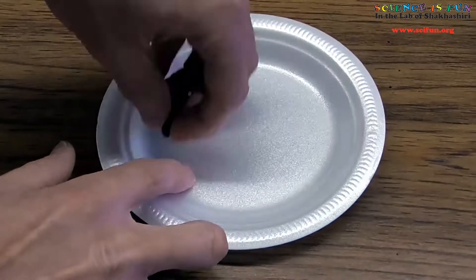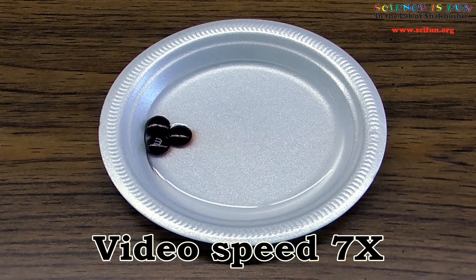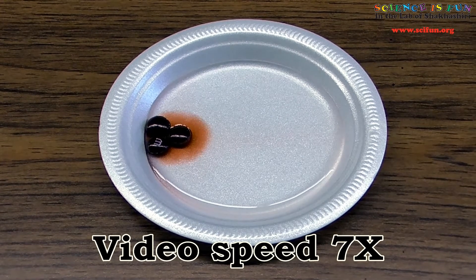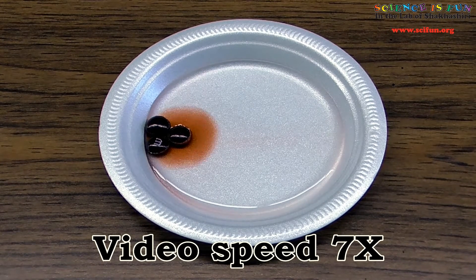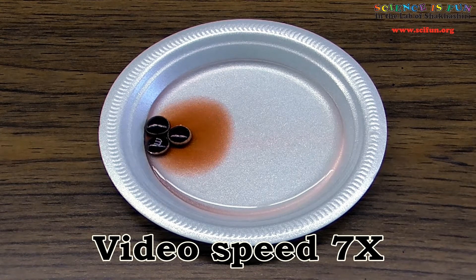First, let's repeat the experiment, but this time let's only use one color and place them all in the same region. Well, just like before, the colorful dye from the candy spreads out into the water. It's also the case that sugar from the candy is spreading out into the water and dissolving to form sugar water.